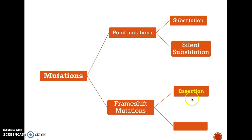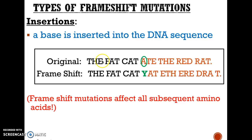The first frameshift type is an insertion — when we insert one letter. Think of the sentence 'the fat cat ate the red rat' read three letters at a time. If we insert a Y right next to the A, from there on the sentence makes absolutely no sense. That's exactly what happens during an insertion mutation — it's a frameshift insertion because inserting a letter changes every single codon.